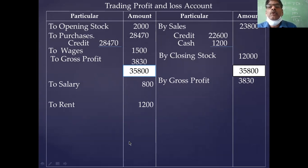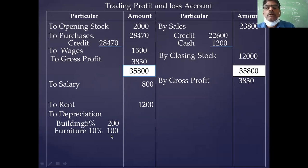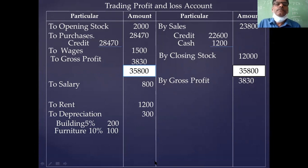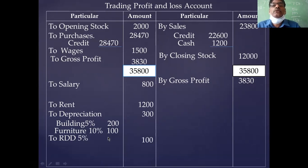Come to the adjustments. First adjustment is depreciation. Building at 5% — 5% of 4,000 is 200. Furniture at 10% — 10% of 1,000 is 100 rupees. Total depreciation is 300 rupees. Next adjustment: provision for doubtful debts. Debtors closing balance is 2,000. At 5% — RDD is 100 rupees. Take this in the P&L account debit side and deduct from closing debtors in the balance sheet.